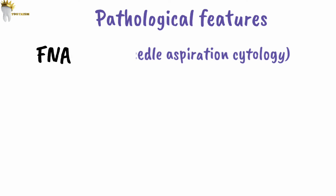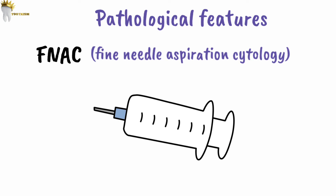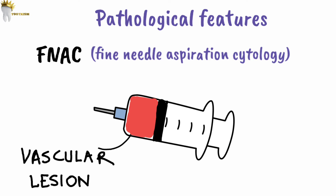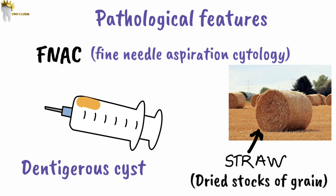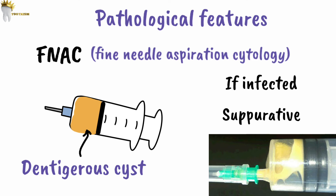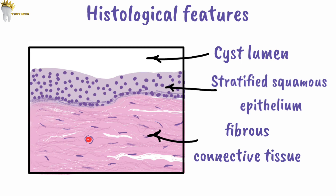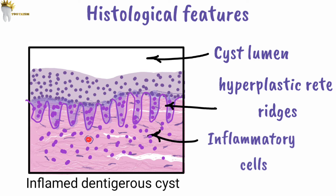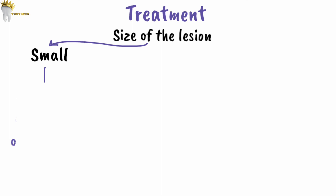Regarding pathological features, aspiration is recommended for any cystic lesion to assess the nature of the aspirate and send it for cytopathologic examination. Aspiration also helps recognize vascular lesions and can strongly suggest the more aggressive odontogenic keratocyst. If not infected, dentigerous cyst aspiration yields a straw-colored to brown fluid; if infected, the contents will be grossly suppurative — thick pus. Histologically, a non-inflamed cyst shows a thin epithelial lining and fibrous connective tissue wall; an inflamed cyst shows hyperplastic rete ridges and inflammatory infiltrate in the fibrous wall.